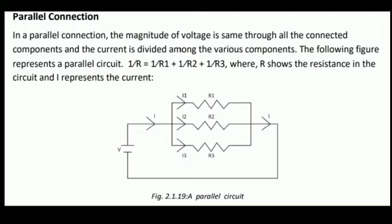The following figure represents a parallel circuit where 1 by R equals 1 by R1 plus 1 by R2 plus 1 by R3, where R shows the resistance in the circuit and I represents the current.